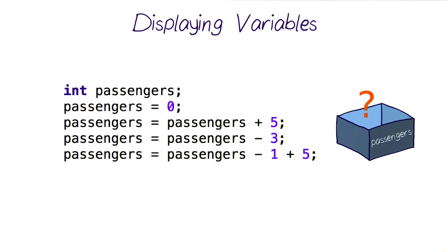We know it's stored inside this variable called passengers here. But how do we tell the computer to show us its value? Remember that print line instruction that we learned earlier? That's exactly what we need now.